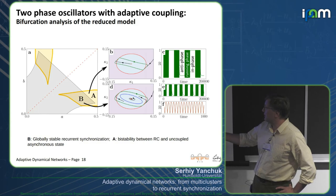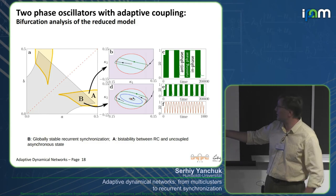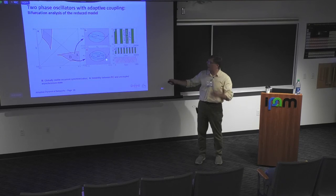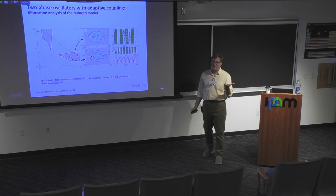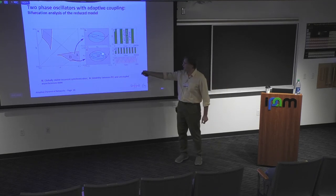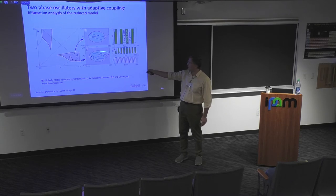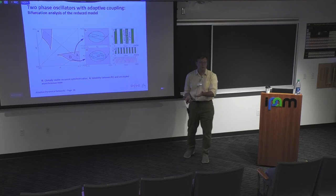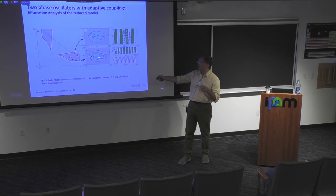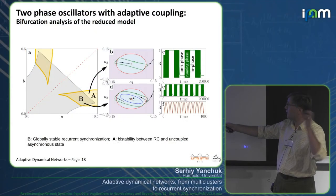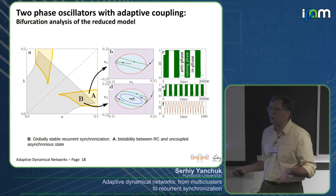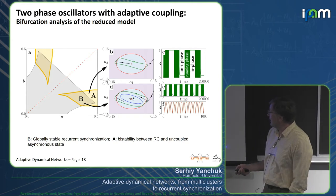In region B, we have coexistence of recurrent synchronization — a green limit cycle — and a stable fixed point inside. The boundary between the two regions is an unstable blue cycle. If we start with coupling weights sufficiently large outside this blue circle, we converge to the green limit cycle and have recurrent synchronization. But if initial coupling weights are not so strong — inside this domain — we converge to the fixed point, and the system dynamically decouples. The green limit cycle is asymptotically stable; the blue cycle is unstable, forming the boundary between basins of attraction.